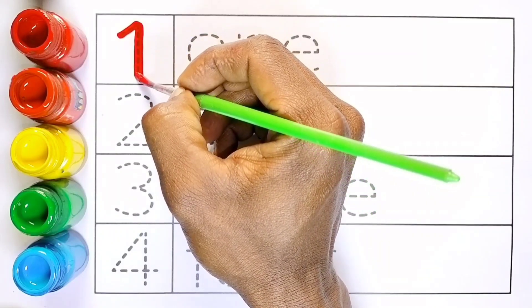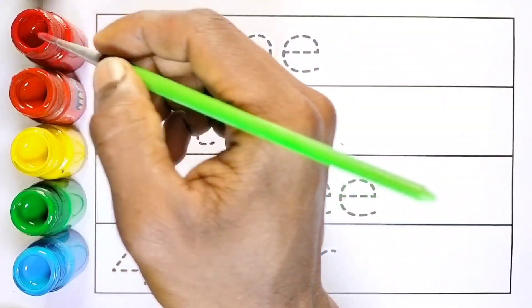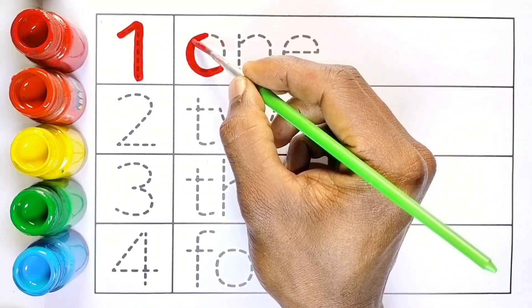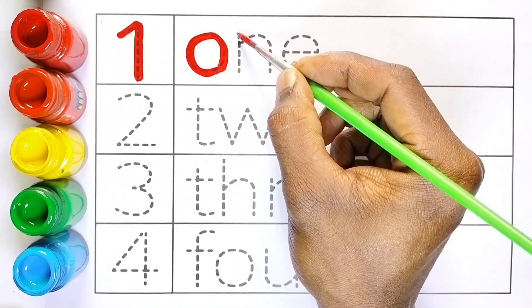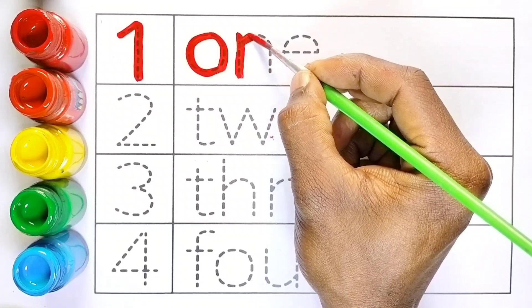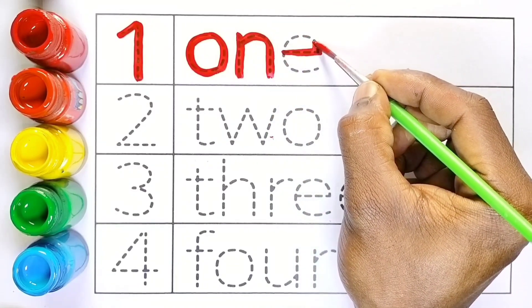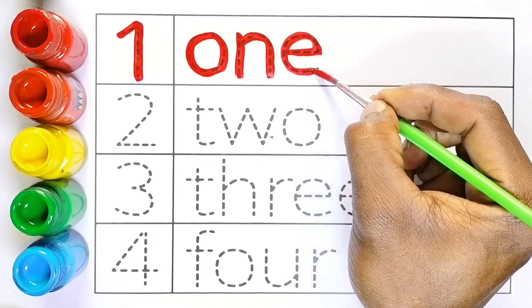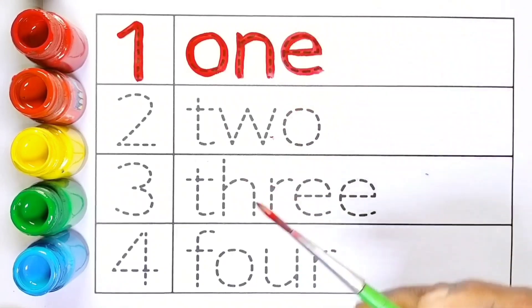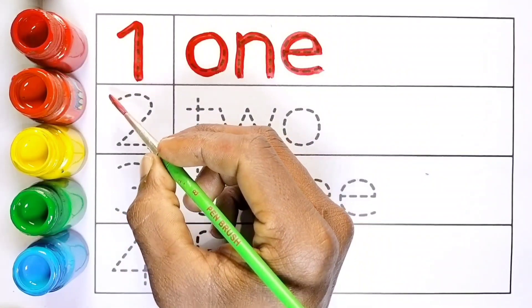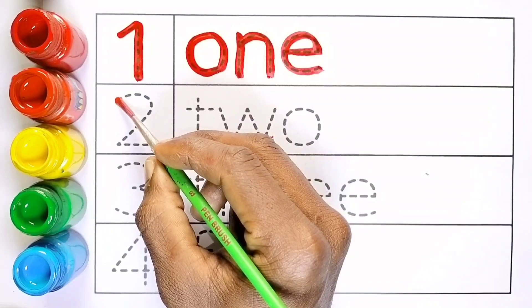One, one. O, N, E. One, one matlab ek. Orange color. Two.